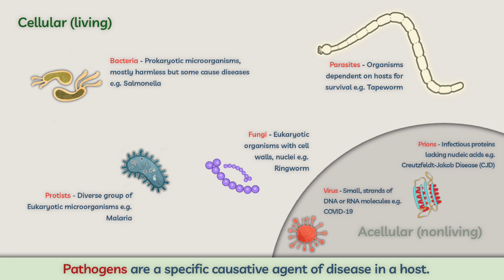Now for acellular pathogens — the non-living ones. Viruses are non-living particles that need a host in order to multiply; they are small strands of DNA or RNA molecules. A recent example is COVID-19. There are also prions, which are infectious proteins lacking nucleic acids — an example being Creutzfeldt-Jakob disease, or CJD.